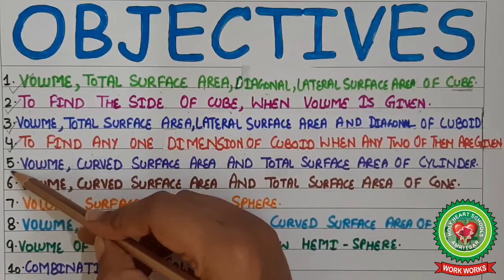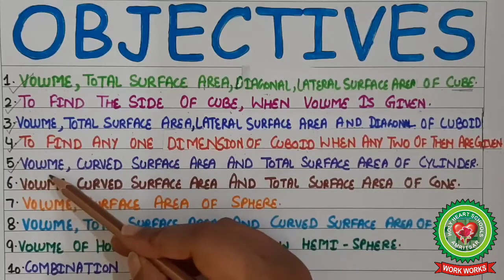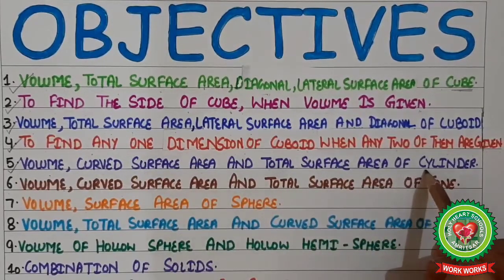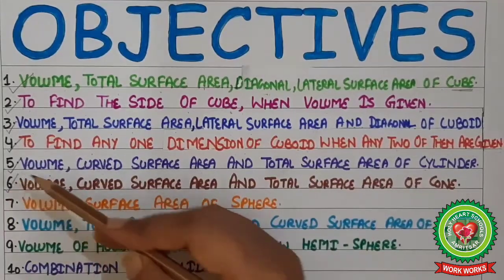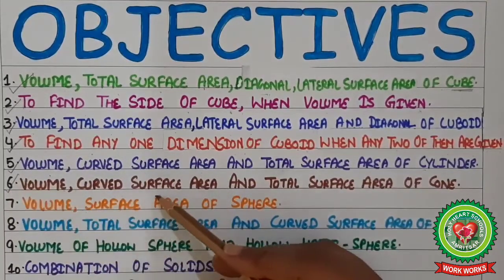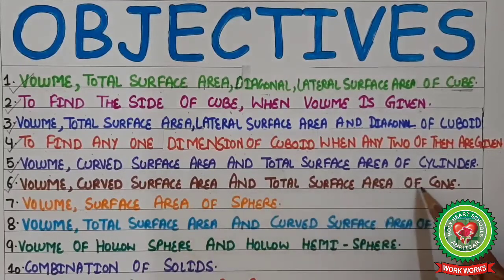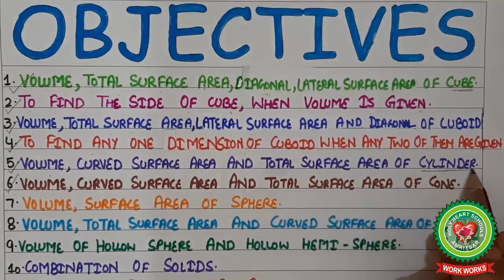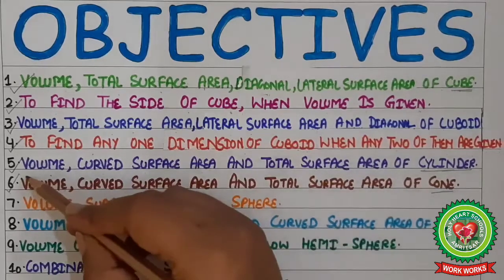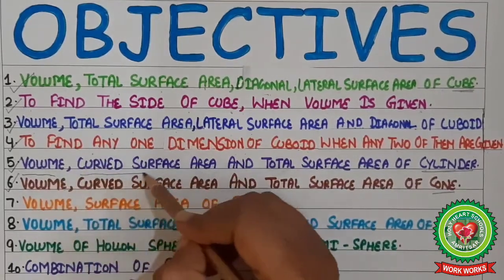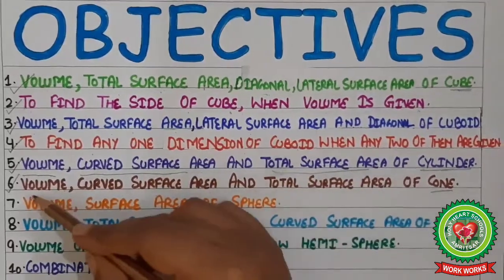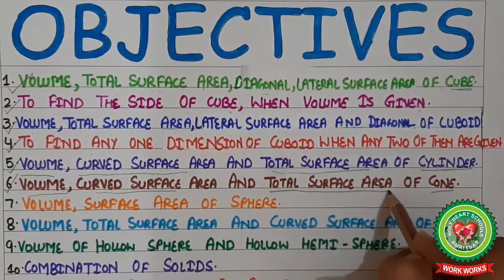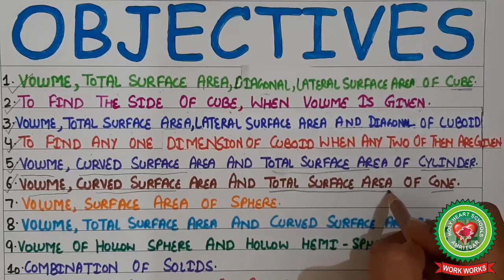In objective number five, we will learn the volume, curved surface area, and total surface area of a cylinder. The next objective we will discuss is the volume, curved surface area, and total surface area of a cone. So today we will do sums related to cylinder and cone. First of all, we will revise the six formulas related to cone and cylinder, then we will do the questions.